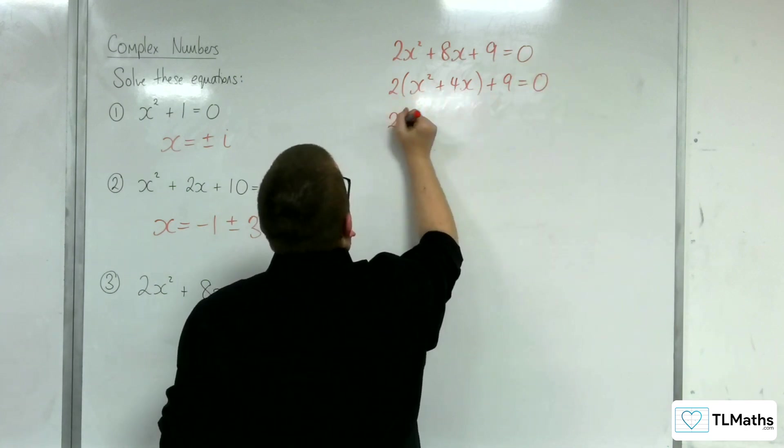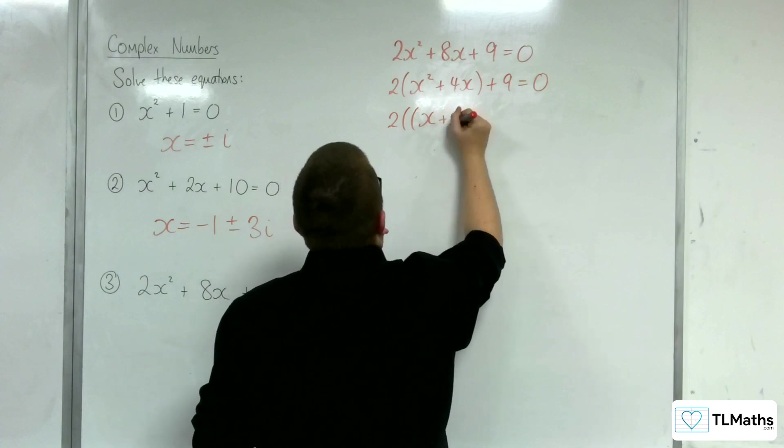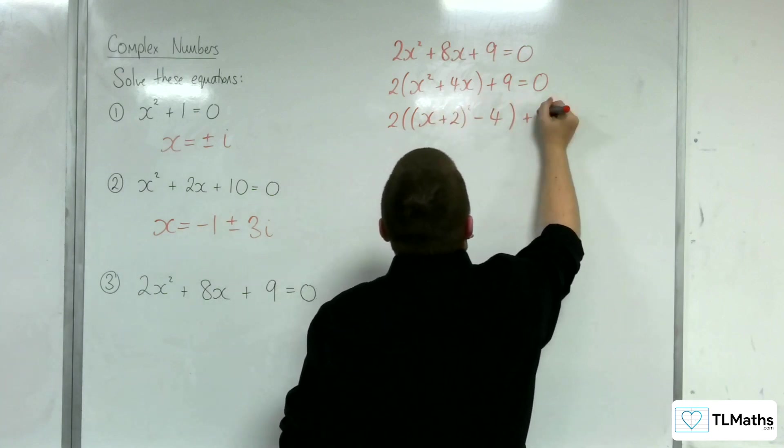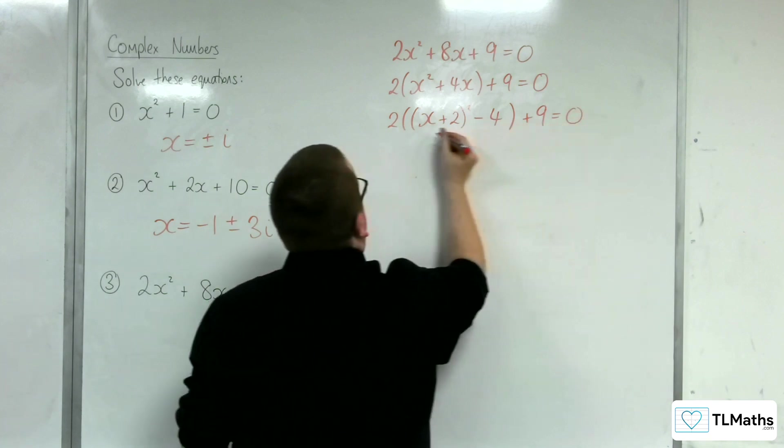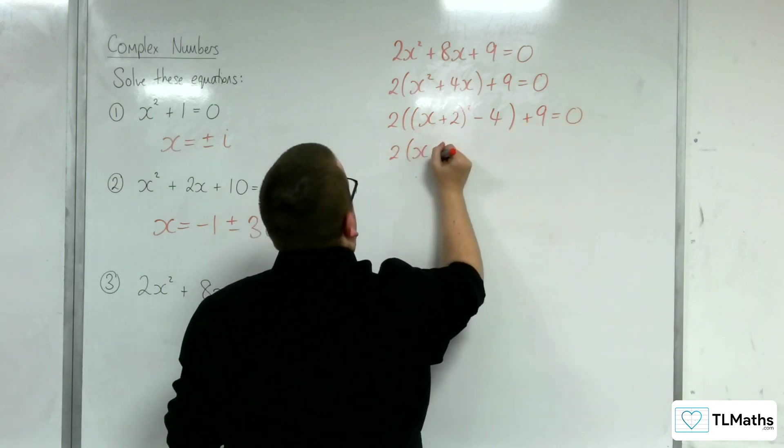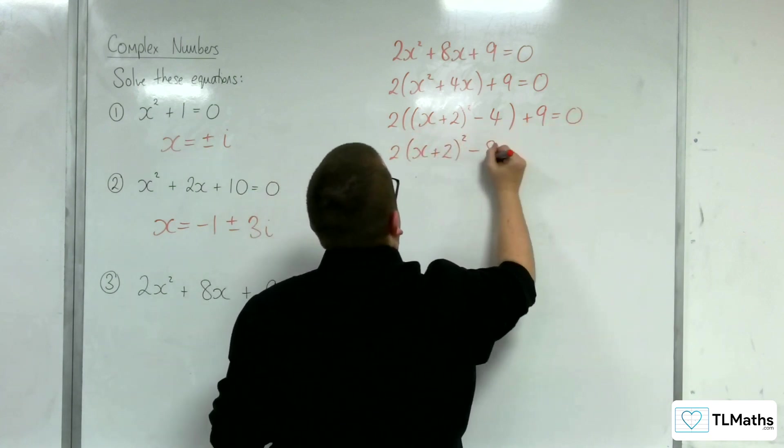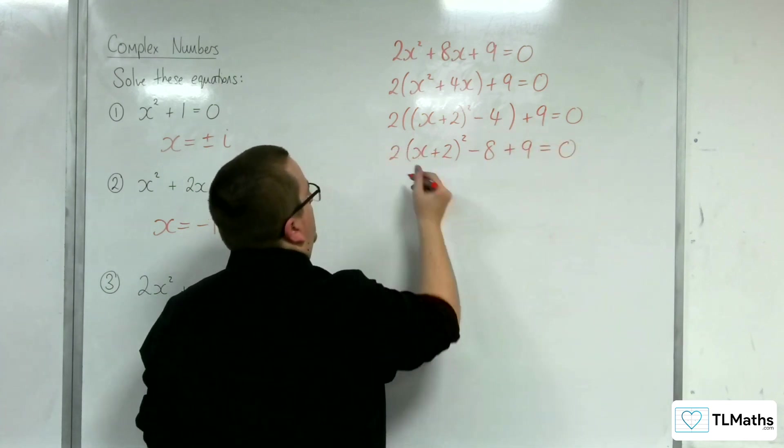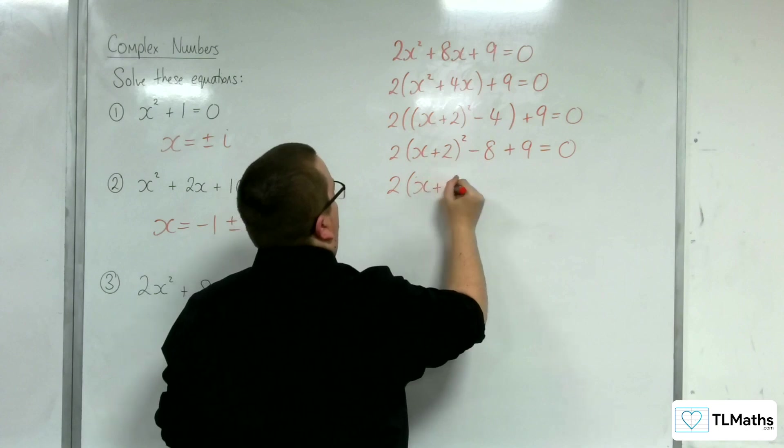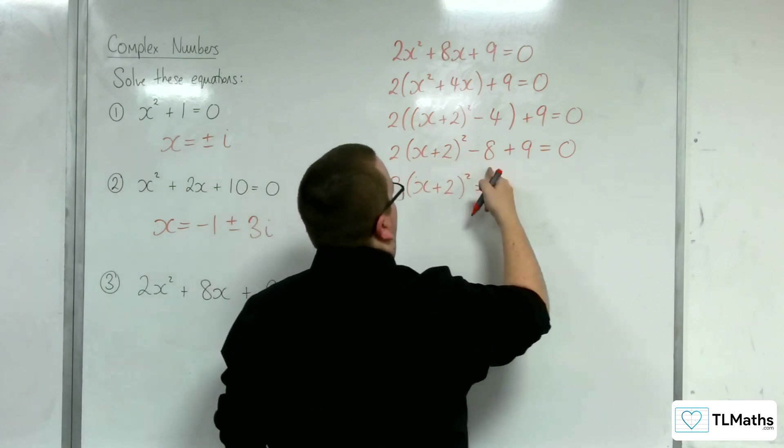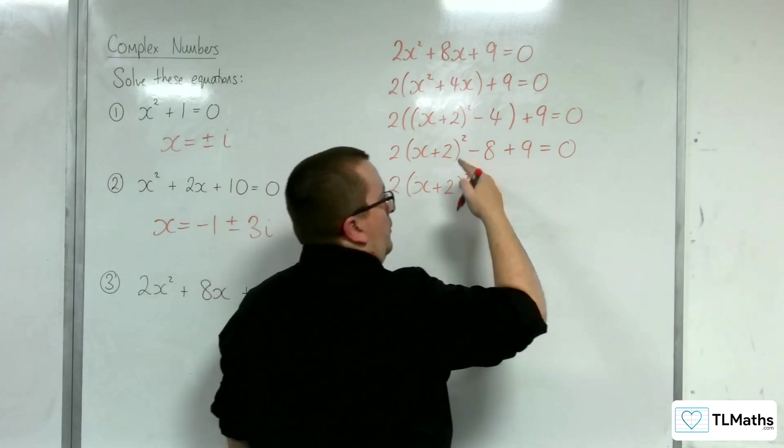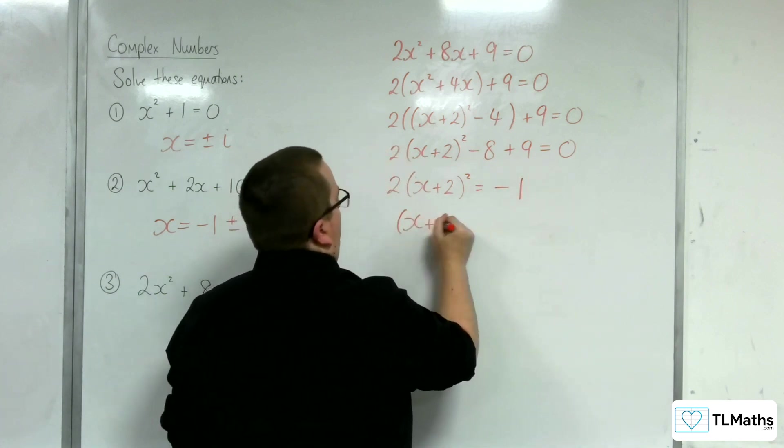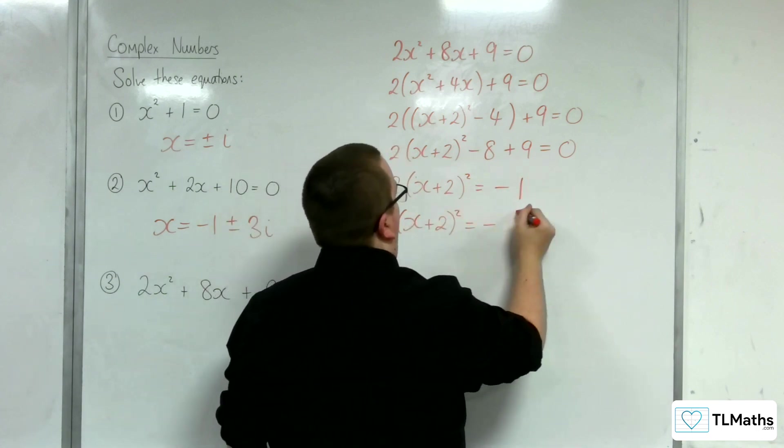Then I'm going to complete the square on the inside. So, we've got x plus 2 all squared, take away the square of 2, so take away 4 plus the 9 is 0. Then multiply out. So, we've got 2 lots of x plus 2 squared. We've got minus 8 plus 9, which is 1. So, I've got to subtract 1 from both sides. So, we've now got x plus 2 squared is minus 1 half.